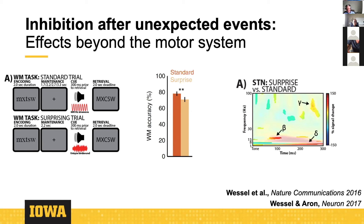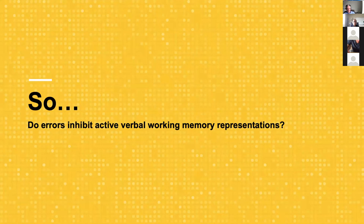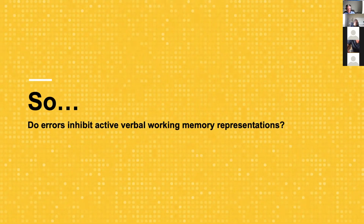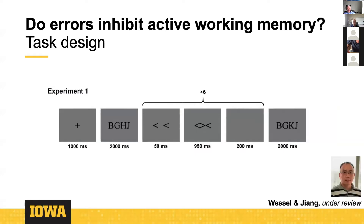Let's come back to errors specifically and ask: do errors inhibit active verbal working memory representations? Is the same thing we found for unexpected events also true for action errors? This is a behavioral study run in collaboration with Chiffon, using the same Sternberg-type working memory paradigm from our 2016 Nature Communications paper. There's a delay interval, but instead of unexpected sounds, it contains a motor task — specifically an Eriksen flanker conflict task.